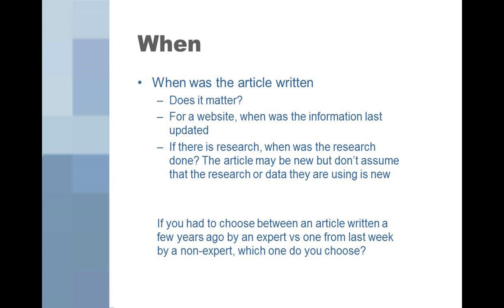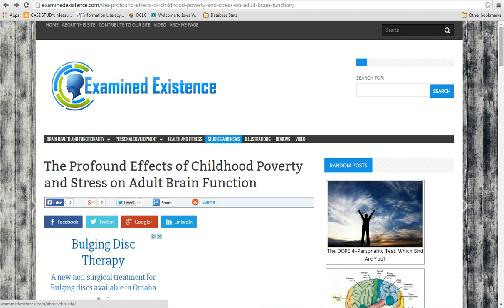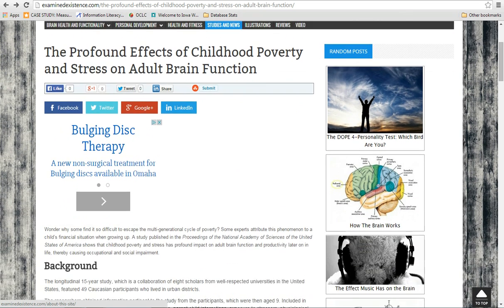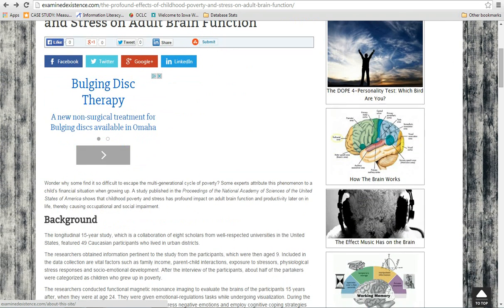Dates are important too. When was the article written, or does that matter? If you are doing research on things like medicine or technology, dates are very important — new developments happen all the time in these fields, and you want to make sure you have the current information. If you were doing research on historical information, though, the date may not matter. For websites, check to see when the article was written or last updated. Beware of using information that doesn't have a date, and remember, the copyright date at the bottom of the page is not necessarily the same thing as when the article was written.